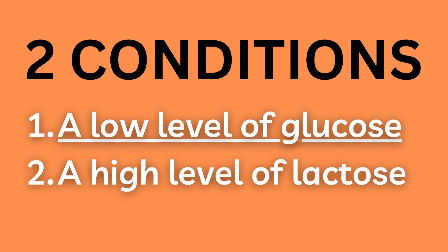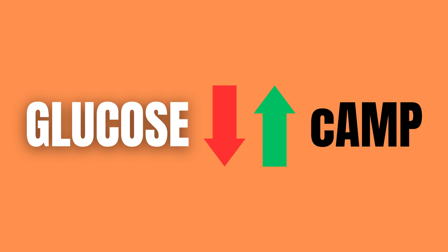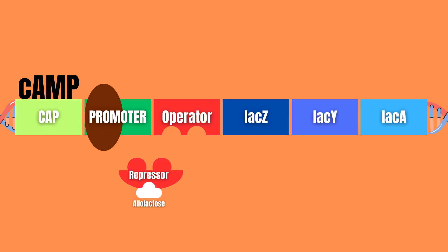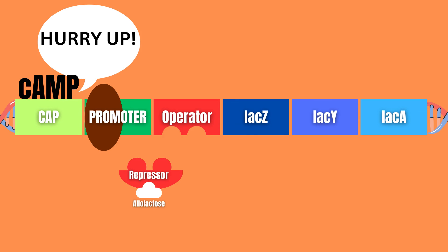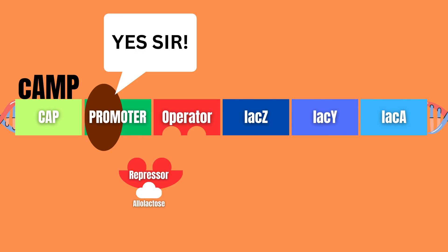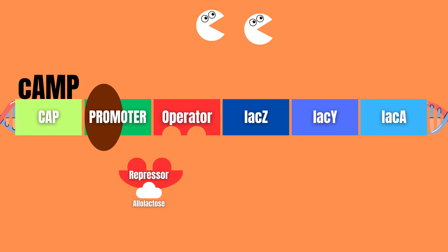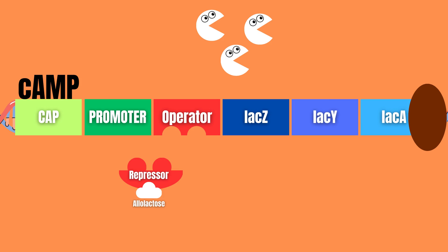But what about the glucose level? A low glucose level leads to high levels of something called cyclic AMP, or just cAMP. cAMP binds to the CAP region, which exists before the promoter on the DNA strand, and once it has bound to the CAP region, it interacts with the RNA polymerase to increase the rate of transcription. In this way, if the level of glucose is really low and lactose is present, the RNA polymerase starts to quickly create beta-galactosidase.